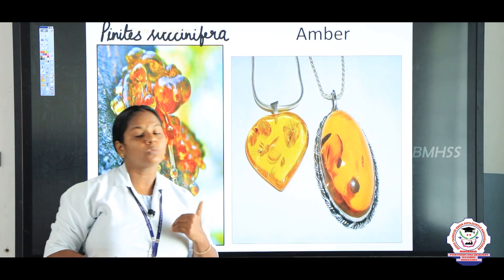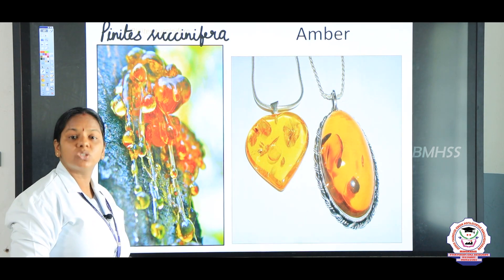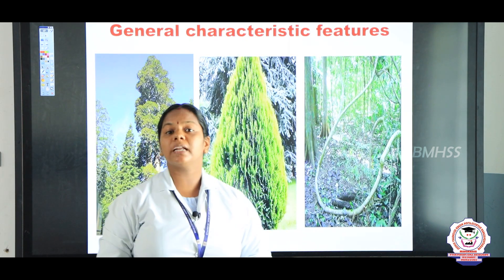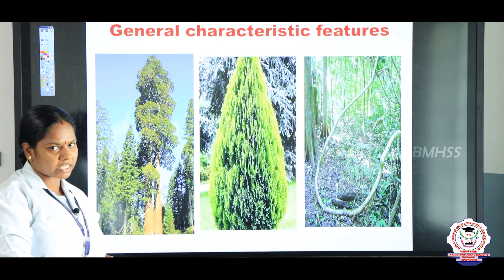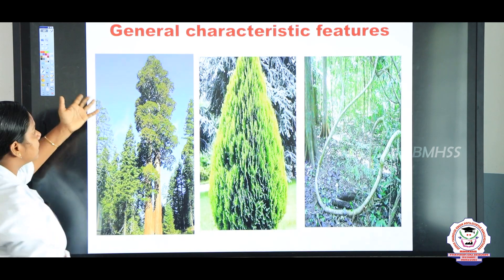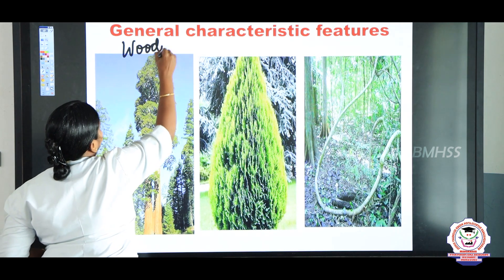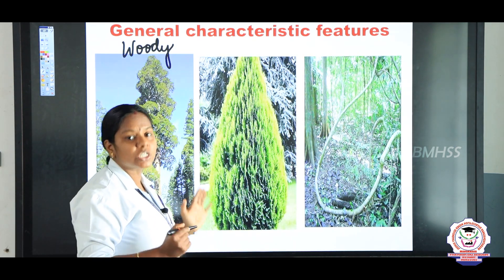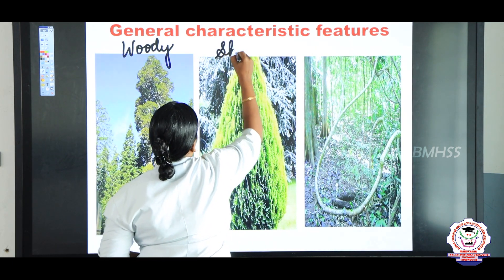We learned what amber is, and these plants were abundant during the Jurassic period. Now we are going to see the general characteristic features of gymnosperms. What are the three types of plants you see here? Some gymnosperms are woody. Some gymnosperms occur as shrubs — mostly grown as ornamental plants.